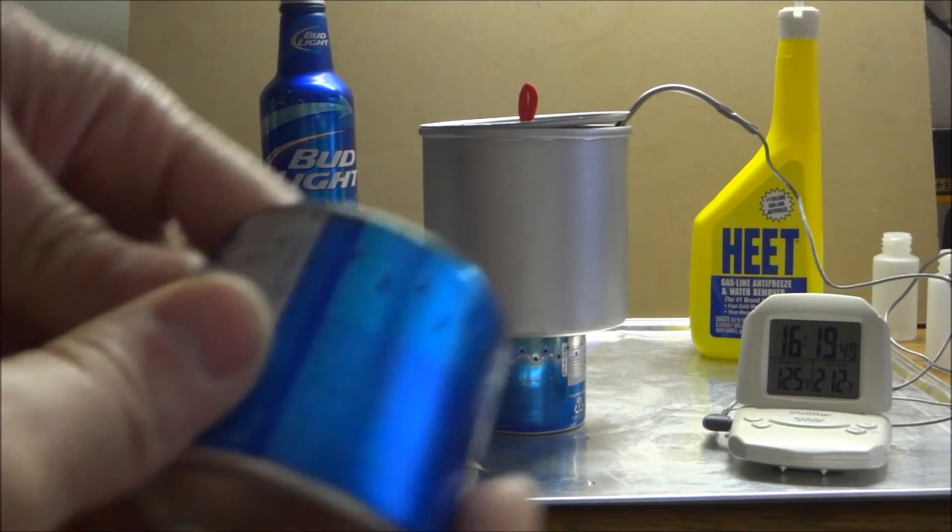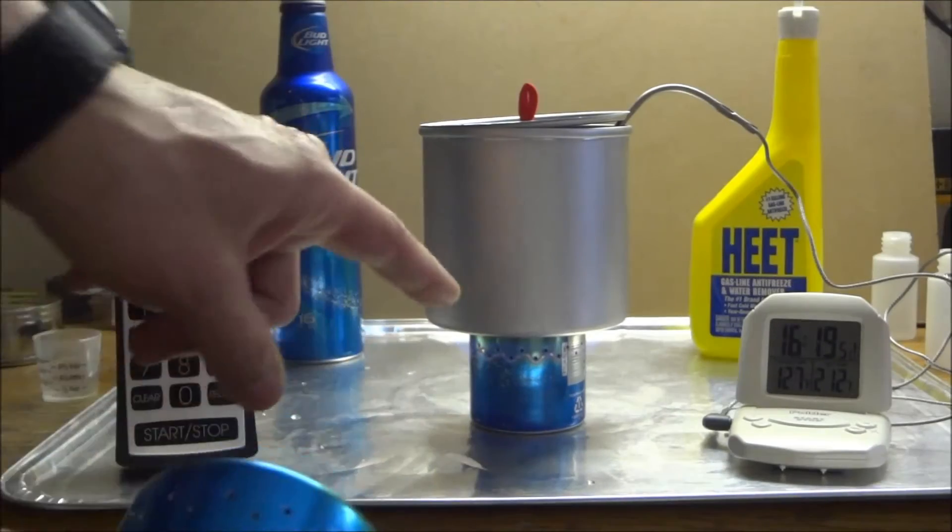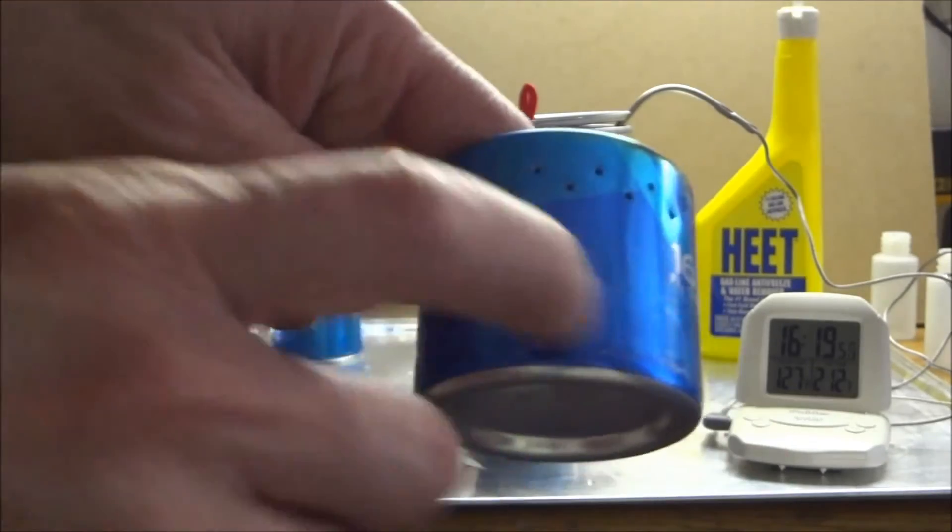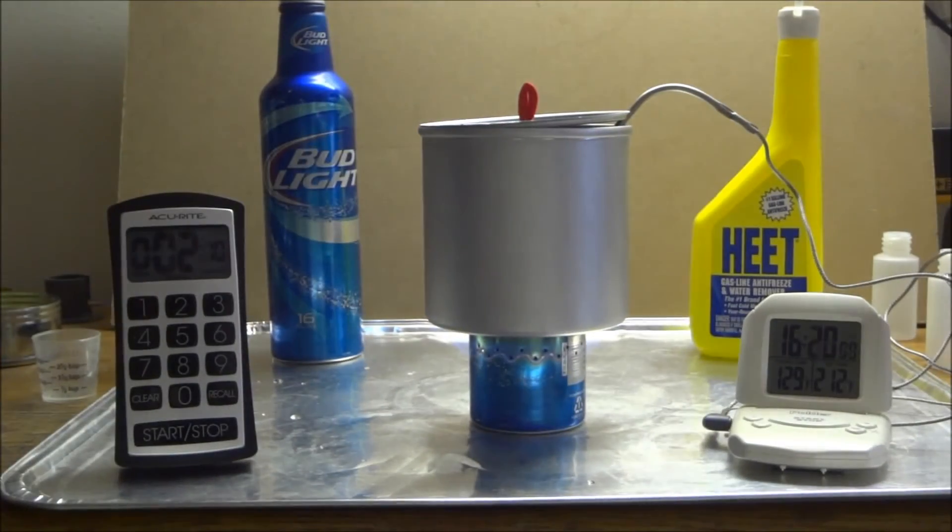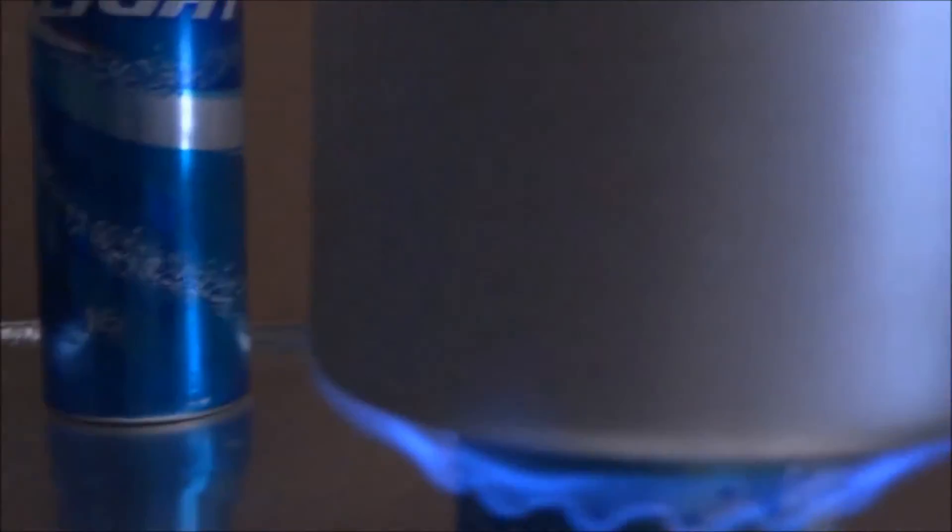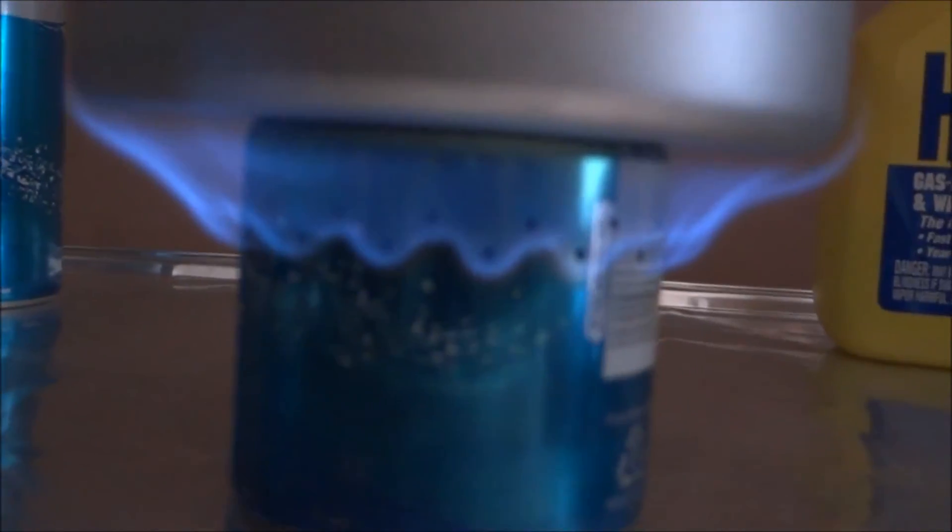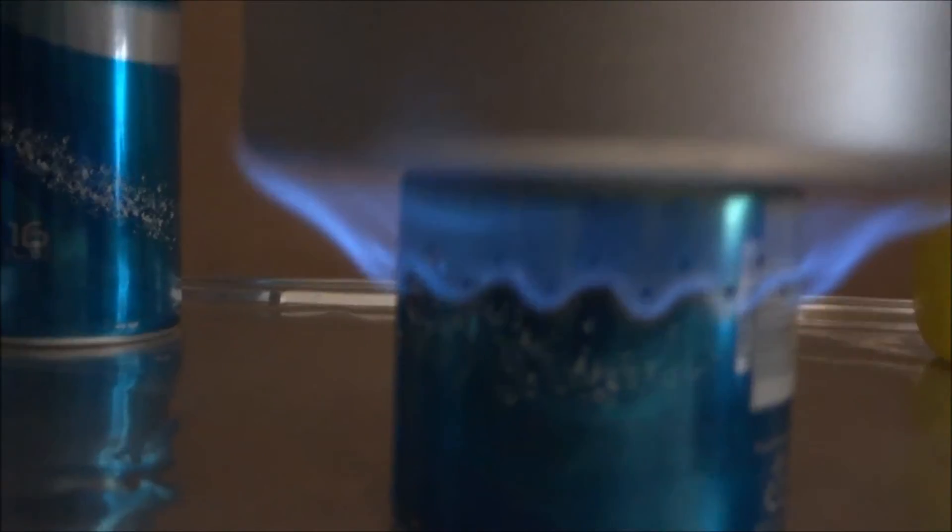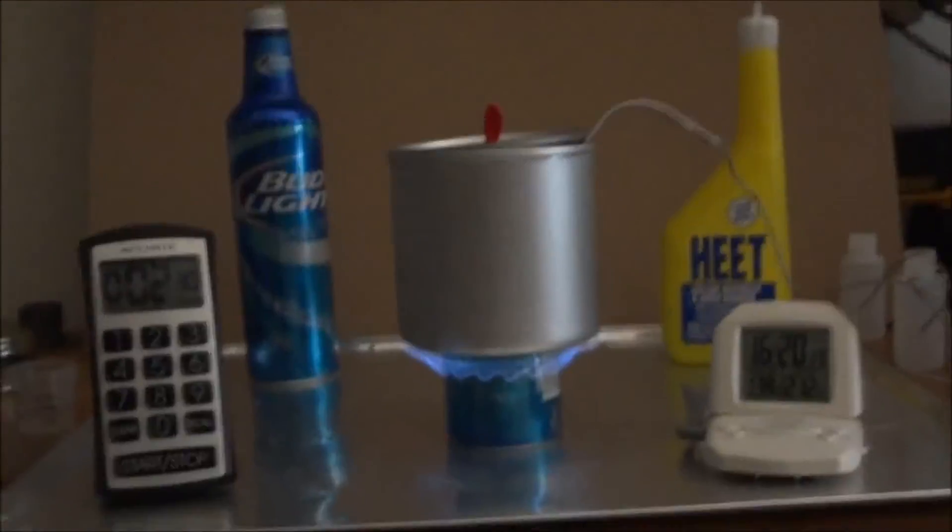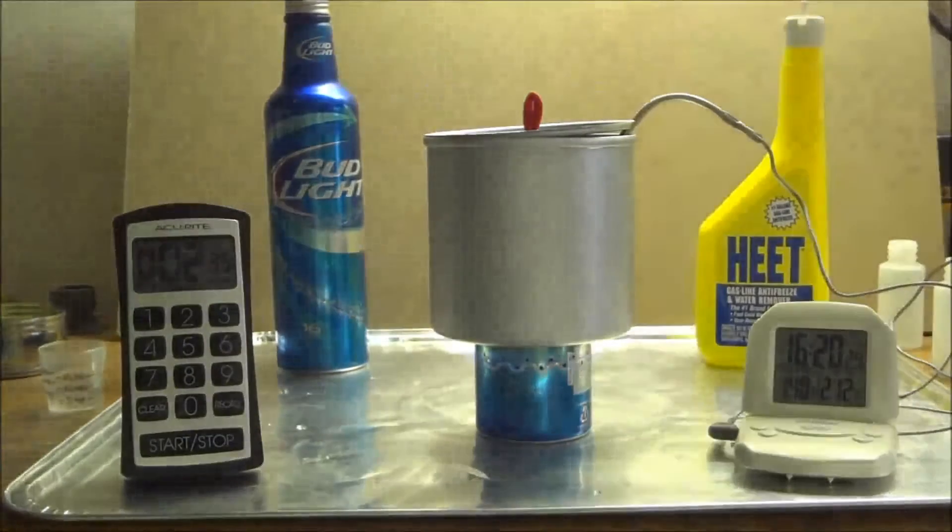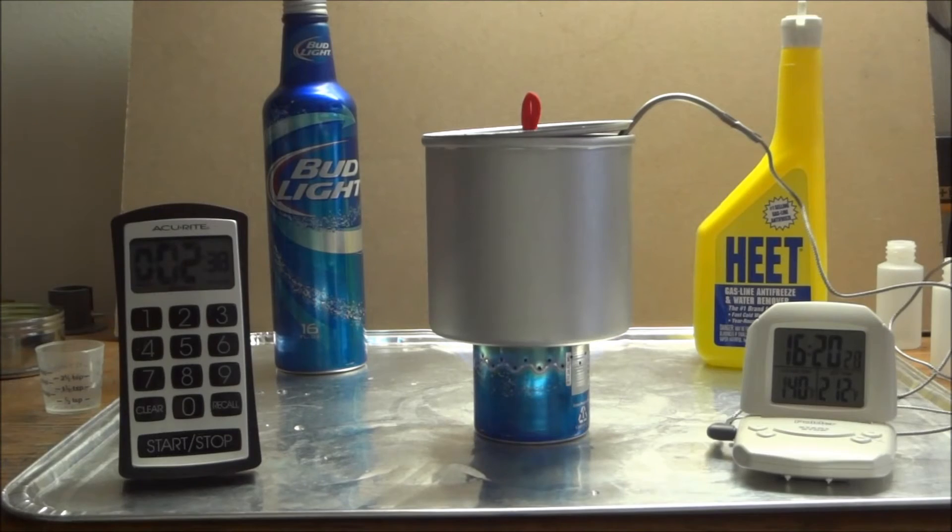I played around with different jets. This one's jetted very similar to that one. It's basically twice as many holes and I just staggered them. It actually gives a real smooth, complete flame pattern. Let me turn the light out. It gives a real smooth, complete flame pattern on the bottom of the stove, and that might help with the boil times on this stove.